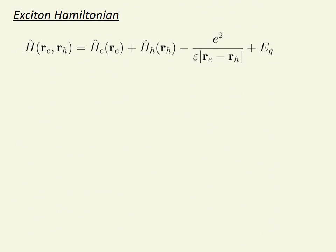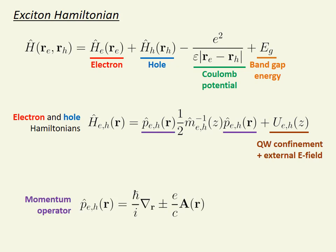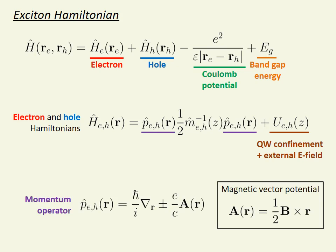To make a theoretical treatment, we begin with this two-body Hamiltonian. The first two terms are the single particle Hamiltonians of the electron and hole in the heterostructure in both electric and magnetic fields. The third is the Coulomb potential and last is the semiconductor band gap. The electron and hole Hamiltonians contain kinetic and potential terms. The potential term includes the quantum well confinement and the potential due to the external electric field. The electron and hole momentum operators each contain the magnetic vector potential A, given here in the symmetric gauge for magnetic field B.